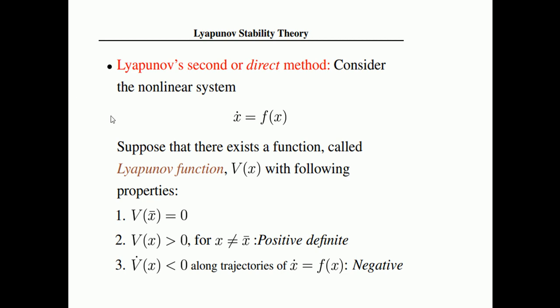The properties of the Lyapunov function V(x) are: first, V(x-bar) equals 0, meaning V is zero at the equilibrium point. Second, V(x) is greater than 0 for all values other than x-bar — it is positive everywhere else. Third, V-dot(x) must be less than 0, meaning its time derivative must be negative. That is the very important condition: the derivative of V must be made negative.